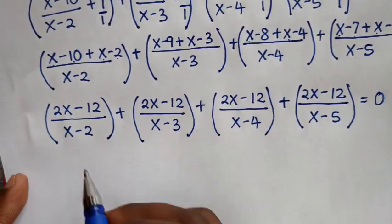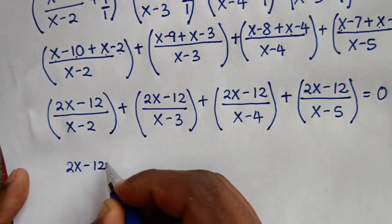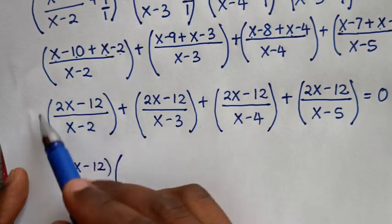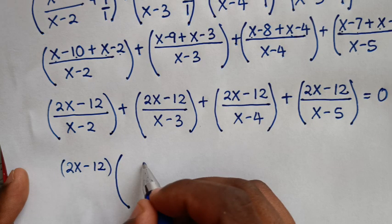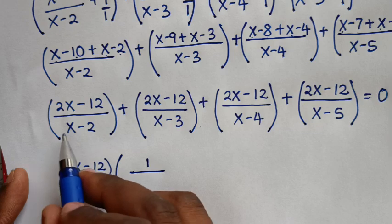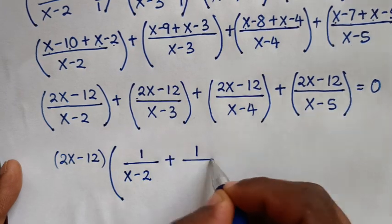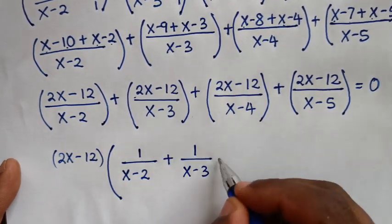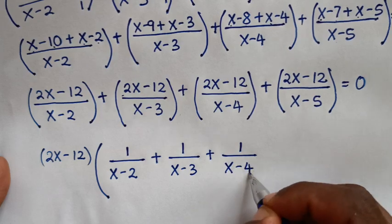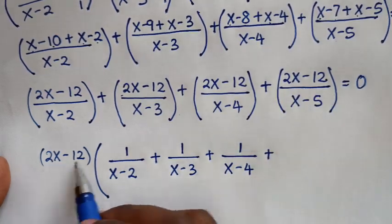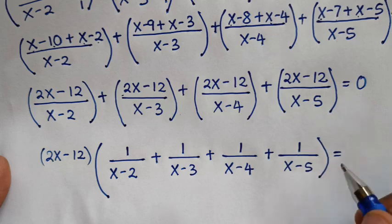In the next step, 2x minus 12 is common, so we factor it out. This gives 2x minus 12 times the bracket: 1 over x minus 2, plus 1 over x minus 3, plus 1 over x minus 4, plus 1 over x minus 5, equals 0.